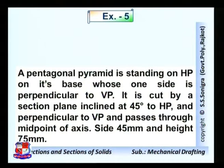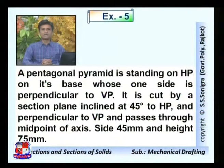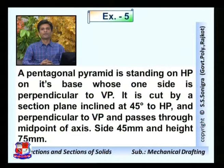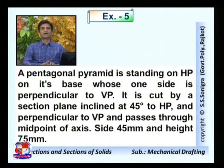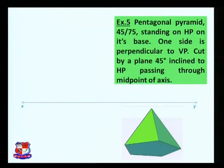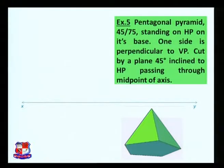Example number 5: a pentagonal pyramid is standing on the HP on its base, with one side perpendicular to the vertical plane. It is cut by a section plane inclined at 45 degrees to the horizontal plane and perpendicular to the vertical plane, passing through the midpoint of the axis. Side length is 45 millimeters and height is 75 millimeters. The pentagonal pyramid has one pentagonal face and five triangular faces joined to the apex point.